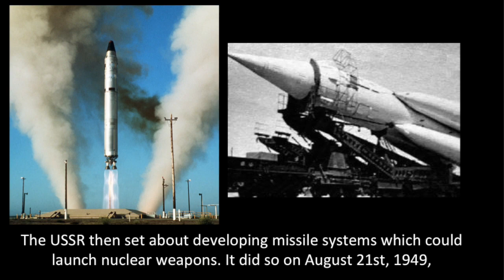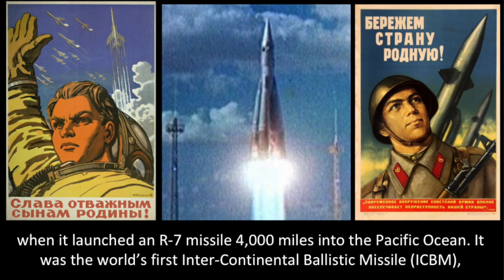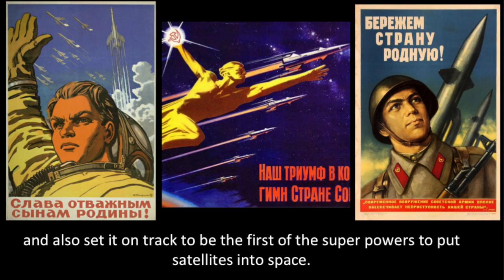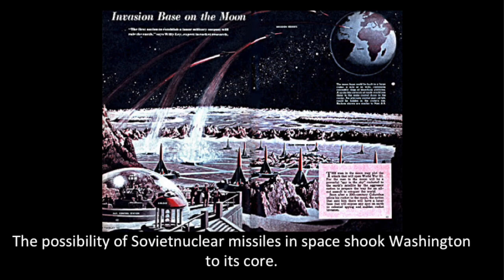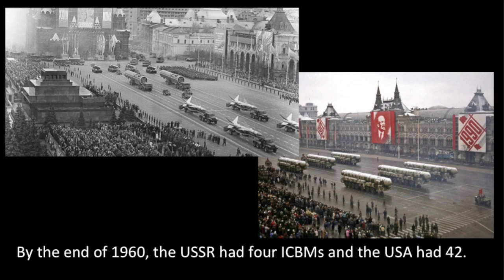The USSR then set about developing missile systems which could launch nuclear weapons. It did so on August 21, 1957, when it launched an R-7 missile 4,000 miles into the Pacific Ocean. It was the world's first intercontinental ballistic missile, or ICBM, and also set it on track to be the first of the superpowers to put satellites into space. The possibility of Soviet nuclear missiles in space shook Washington to its core. By the end of 1960, the USSR had four ICBMs and the USA had 42.